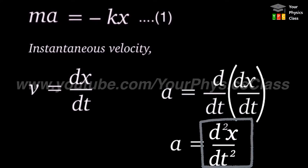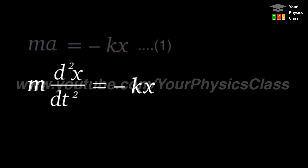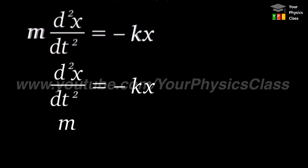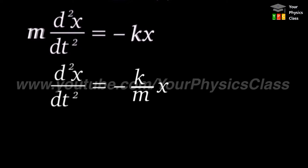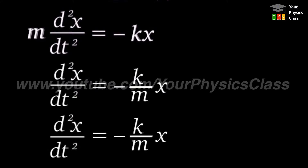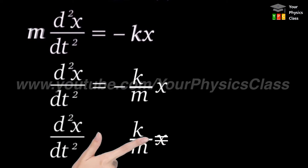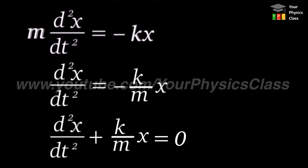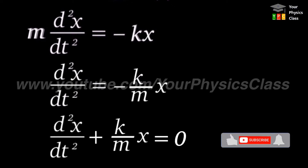Substituting this value in equation 1, we get m times d²x/dt² equal to minus k times x. Transporting m to the right side, and then transporting the entire term to the left side, we get the equation as d²x/dt² plus k/m times x equals 0.